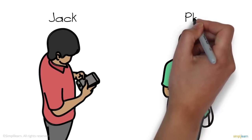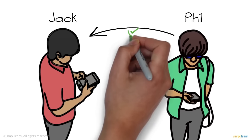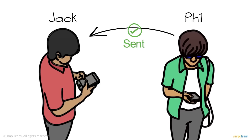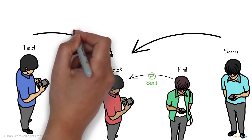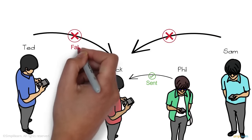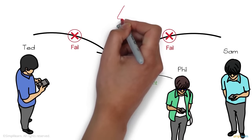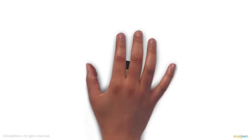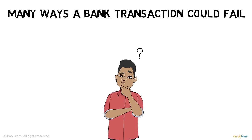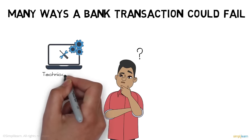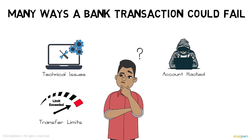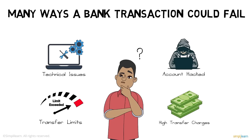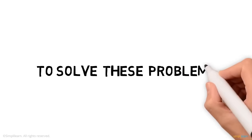On the next day, when Phil sends his share to Jack via online money transfer, the transaction goes through without a hitch. But Ted and Sam's transactions don't go through. The failed transactions cite issues at the bank — it could be due to technical issues, one of their accounts being hacked, daily transfer limits being exceeded, or additional transfer charges.